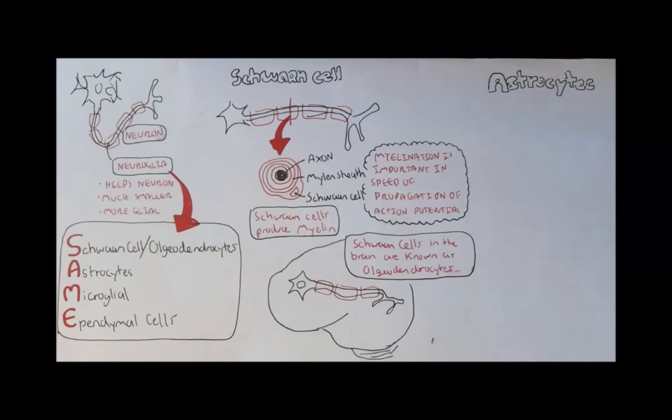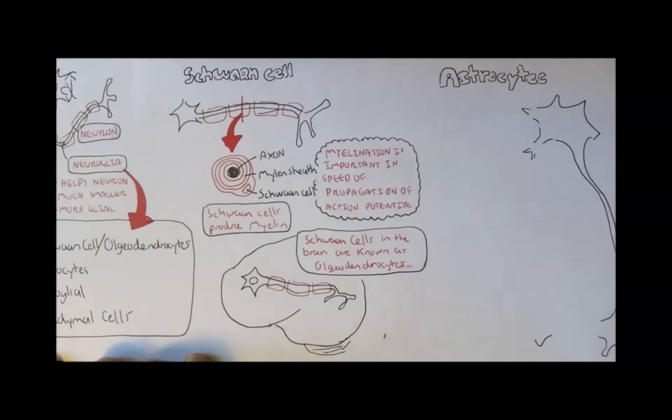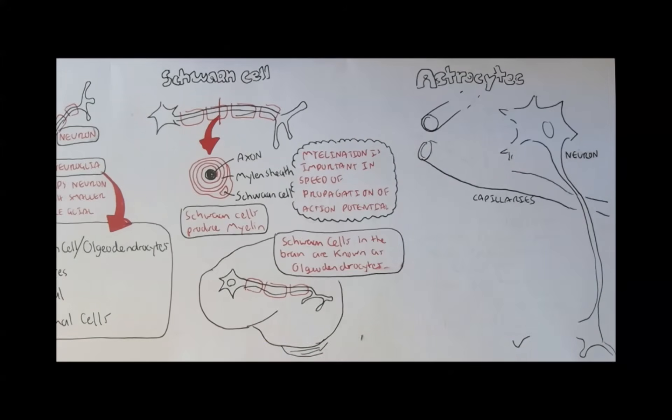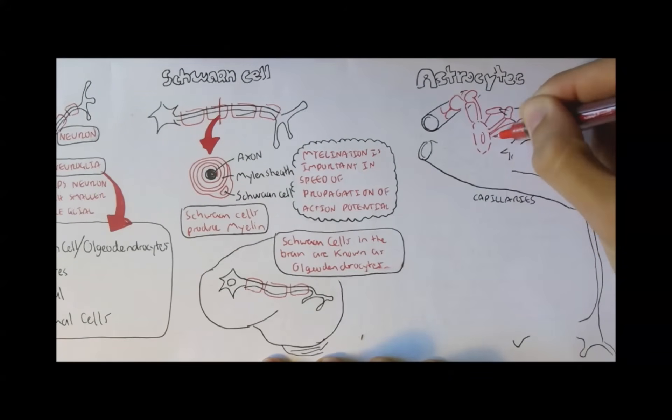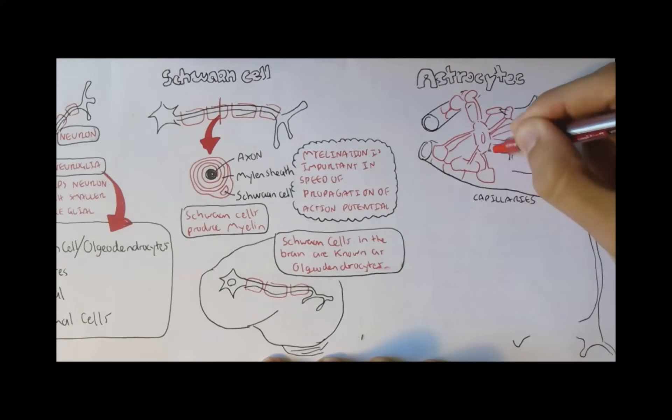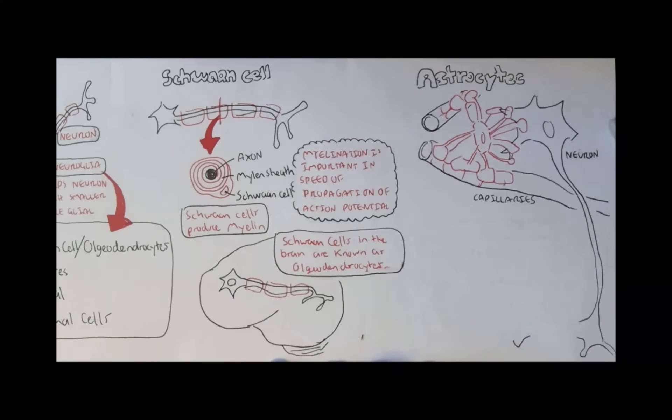Next, we have astrocytes. Let's just pretend we're in the brain now. And here we have the neuron. In the brain, there are also many capillaries to nourish the brain. Astrocytes basically have so many appendages and attach to anything they can find. They can attach to capillaries, neurons, neuroglial cells, other neuroglial cells. And when it attaches to it, it coats it, like protection.